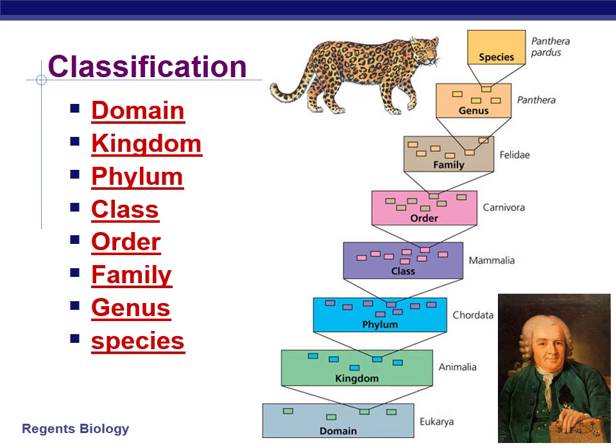Even within this breakdown there are subfamilies, subgenera, and subspecies — but these are the main ones. I do expect you to know the order of them, from the largest and broadest, the domain category, to the narrowest, the species. Here you can see an example using the jaguar.